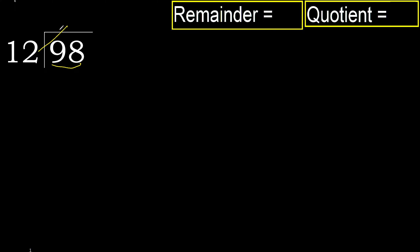12 multiplied by which number is nearest to 98 but not greater? 12 multiplied by 9 is greater. 12 multiplied by 8 is 96 — is not greater.